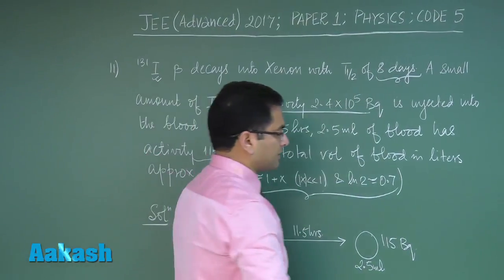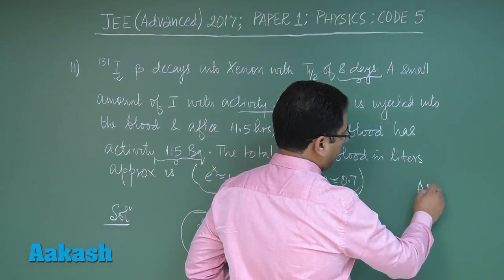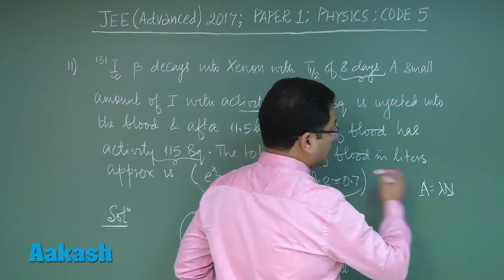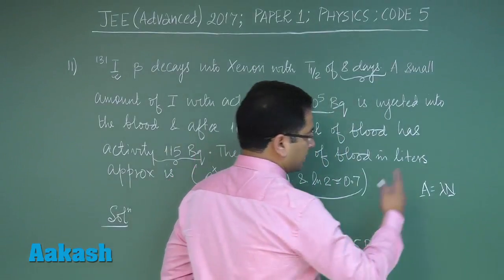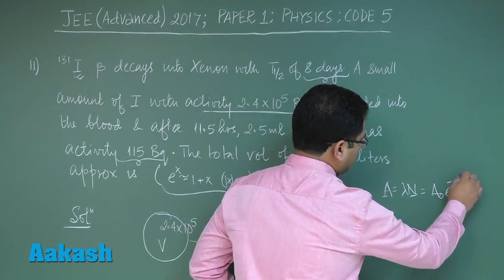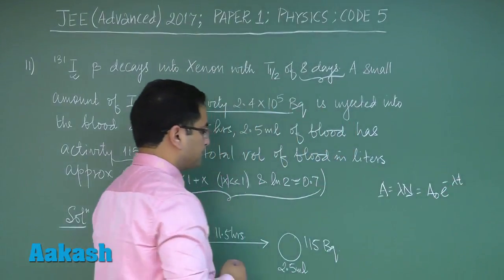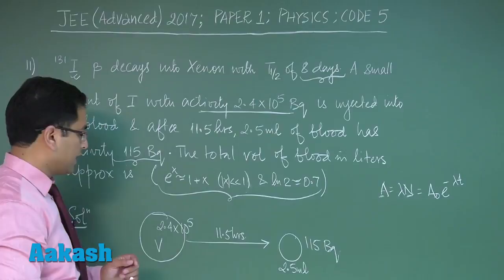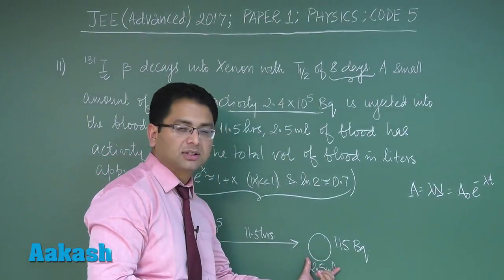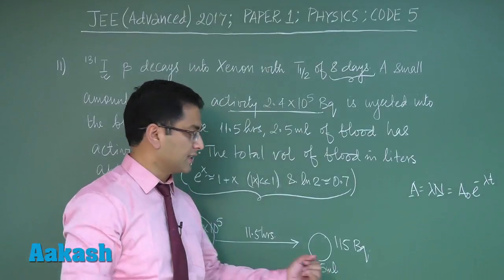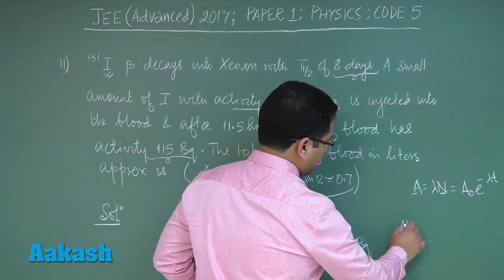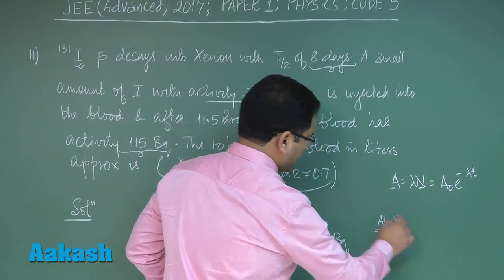So the idea is something like this: the activity directly depends on the number of active nuclei, but activity also depends on the initial activity in this manner. Here, out of the total volume, the considered volume is only this much. So let's say at time t, what would be the activity of V volume of the blood, the entire volume?